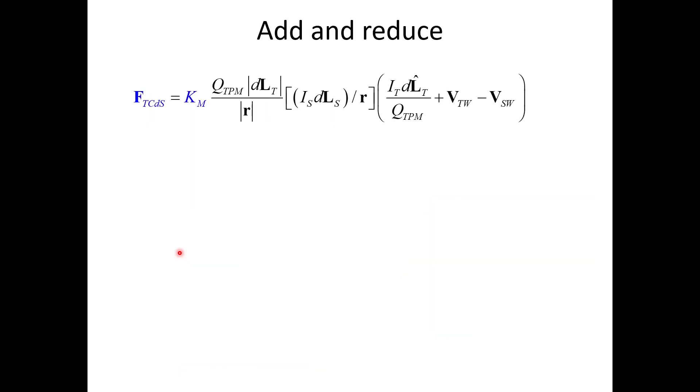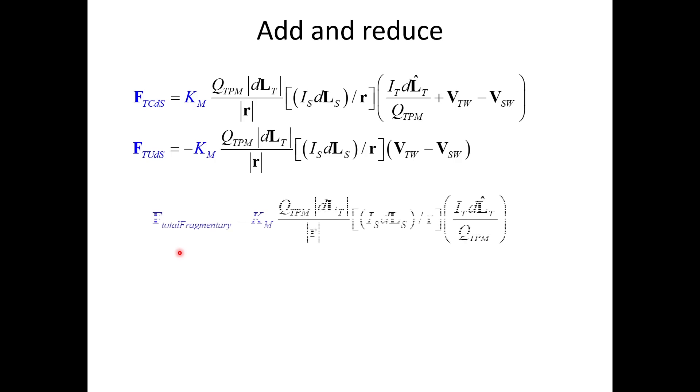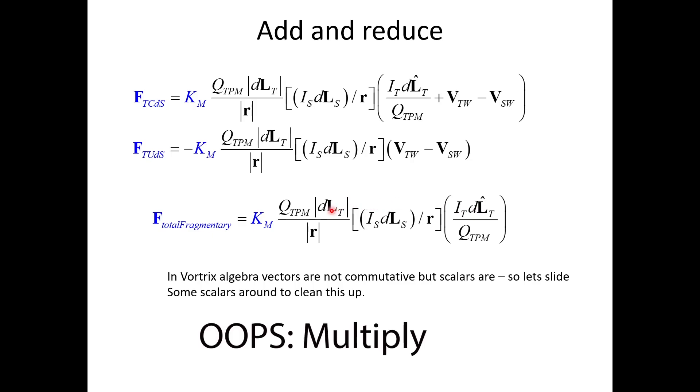Now we take the force on the target conduction charges and the force on the target unbalanced or uncovered charges, and we sum those together. In Vortex algebra, vectors are not commutative, but scalars are. So let's slide some scalars around to clean this up. This is a scalar here because it's not bold. This guy cancels with this guy. We can move these current scalars out of the Vortex equation to make it simpler. This is a scalar because it is the magnitude of a vector. The magnitude of a vector is a scalar. This little hat here means this is the direction of a vector. Once you add the magnitude with the direction of a vector, you get a complete vector. And so this whole thing cleans up very nice and clean.